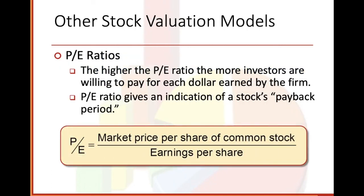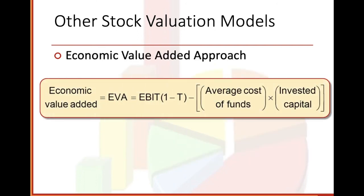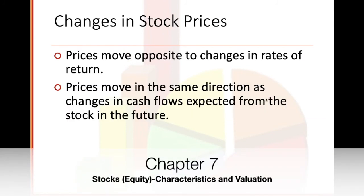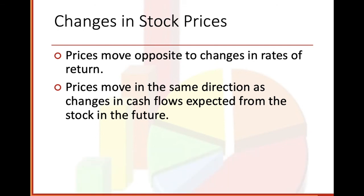Other stock valuation models: P/E ratios — price-earnings ratios. The higher the P/E ratio, the more investors are willing to pay for each dollar earned by the firm. P/E ratio gives an indication of a stock's payback period. It is calculated as market price per share of common stock divided by earnings per share. Economic value added approach: EVA equals EBIT times (1 minus T), minus average cost of funds times invested capital. Changes in stock prices: prices move opposite to changes in rates of return, and prices move in the same direction as changes in expected future cash flows. That's the end of this presentation — if you have questions, feel free to email me or comment.